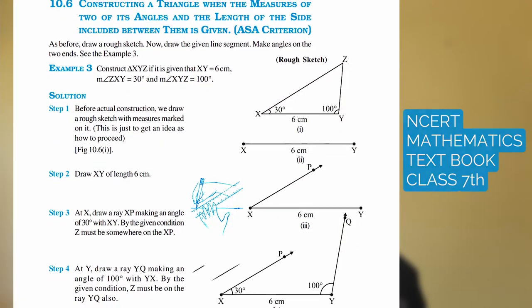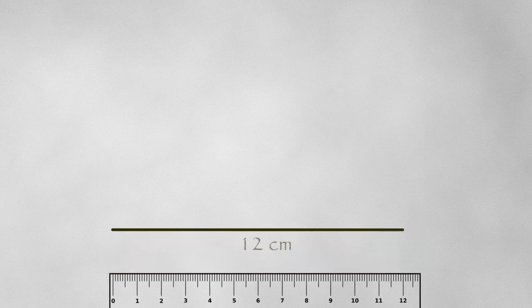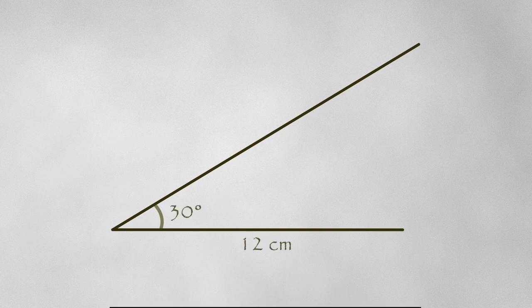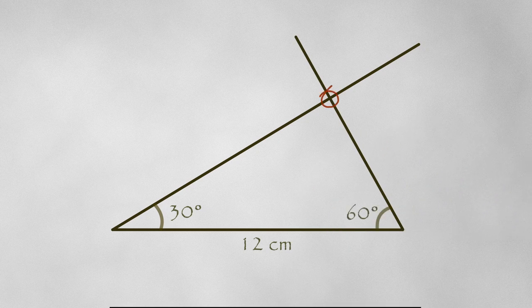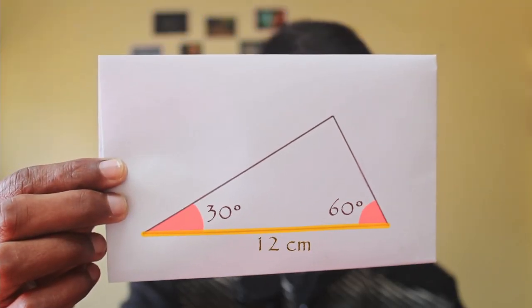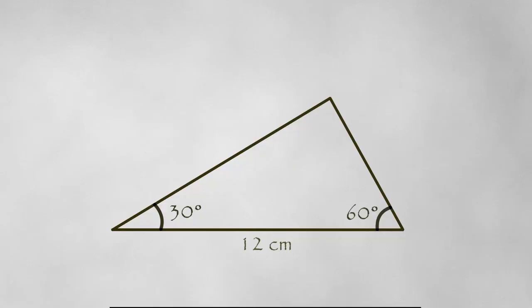Those procedures can be found in textbooks of class 6th or 7th. Let me just demonstrate: you draw a line of given length, extend one line segment at a given angle from one end of that line, do the same for the other end. Where they intersect must be the third point of the triangle — an exact replica of the triangle I showed you. What we just established is that if you construct a triangle with two given angles and a given side, that triangle is unique. There can't be any other triangle satisfying these conditions.